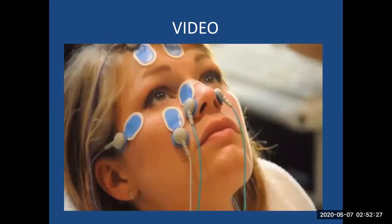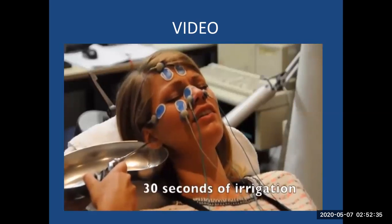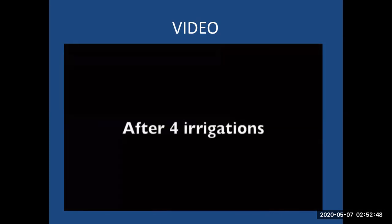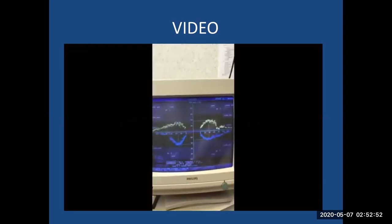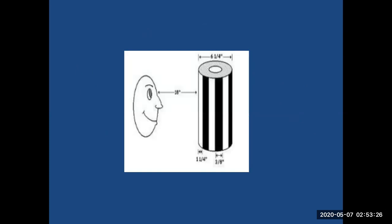Cold water induces nystagmus to the opposite side, and warm water induces nystagmus to the same side. Irrigation is done for 30 seconds and the values are documented. The optokinetic test asks the patient to follow a series of vertical stripes on a rotating drum moving from right to left and then left to right. Normally this produces nystagmus with the slow component in the direction of the moving stripes and the fast component in the opposite direction. Optokinetic abnormalities are seen in brainstem and cerebral hemisphere lesions, helping in the diagnosis of central lesions.